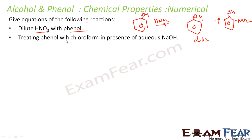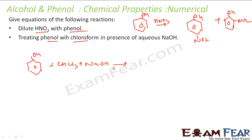The next reaction is treating phenol with chloroform (CHCl3) and NaOH. This is the Reimer-Tiemann reaction, and the product is salicylaldehyde. For the reaction mechanism, please watch the previous videos in this chapter.